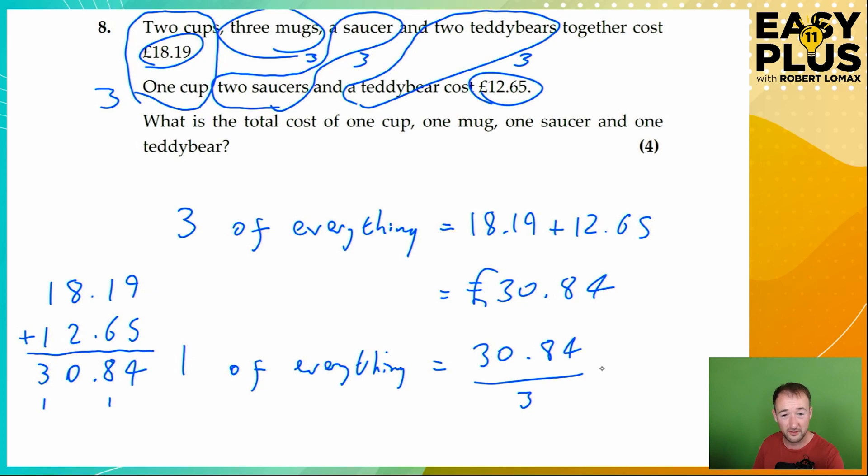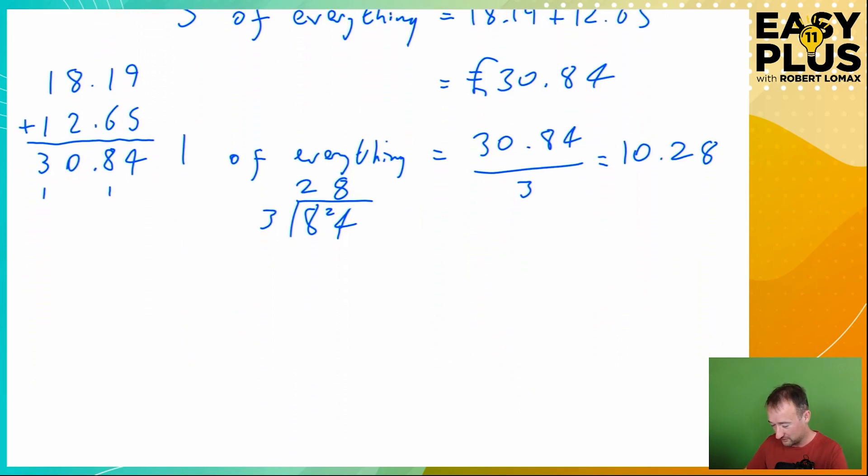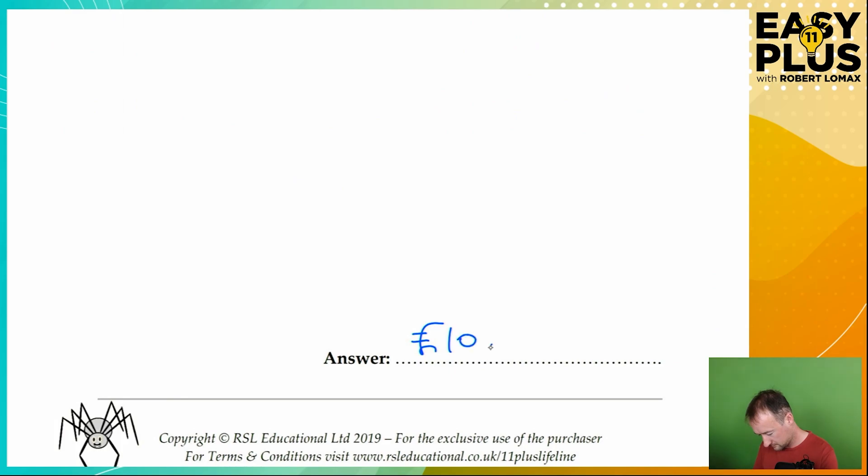And we can see that a third of 30 is 10. And a third of 84 is, of course, 28. Although you could also do that here by doing 84 divided by 3 and doing a quick calculation. And that's it. All we have to do now is write the answer in the answer space with the correct units. And there you have it.